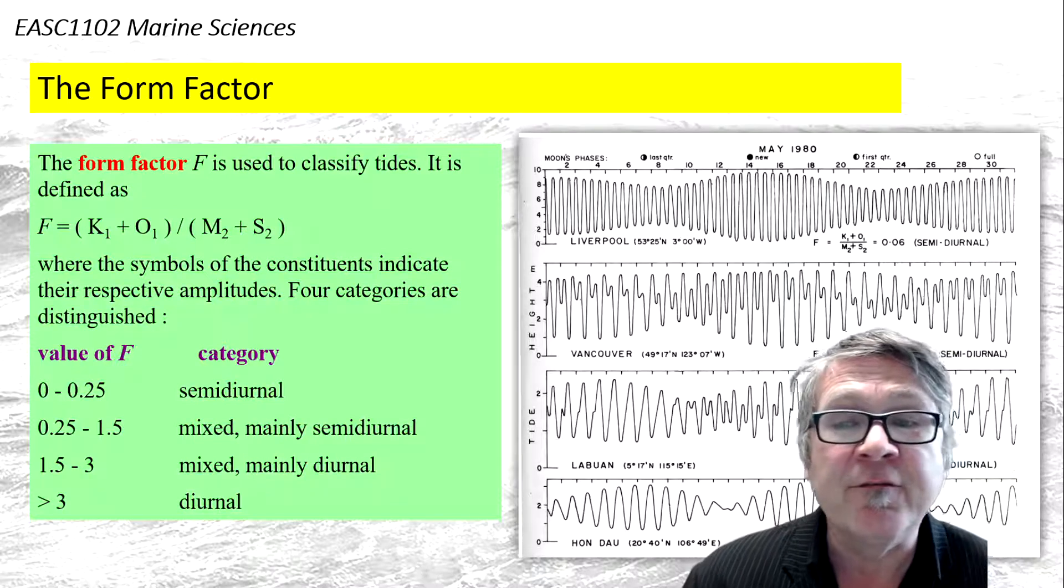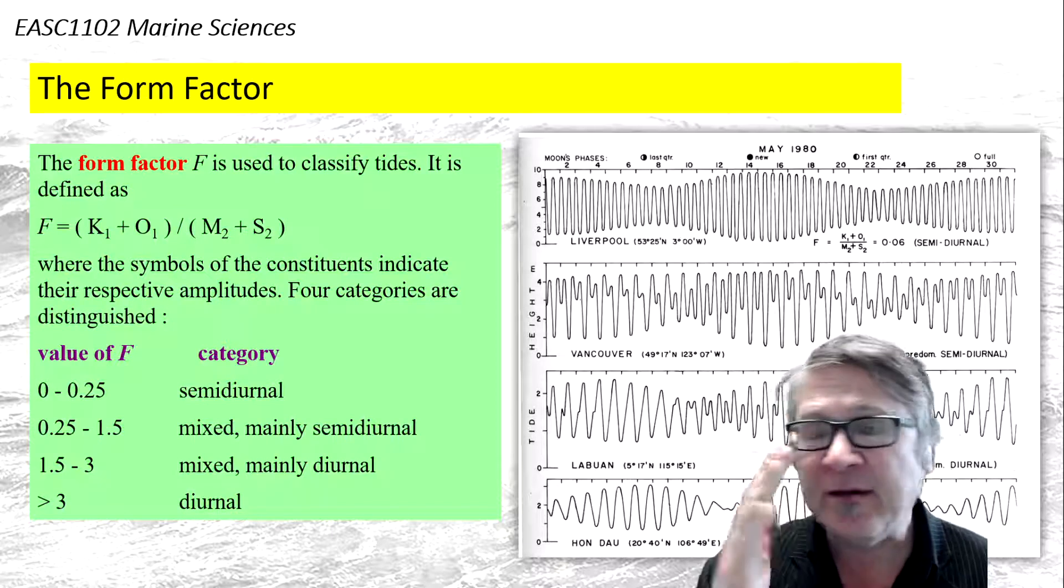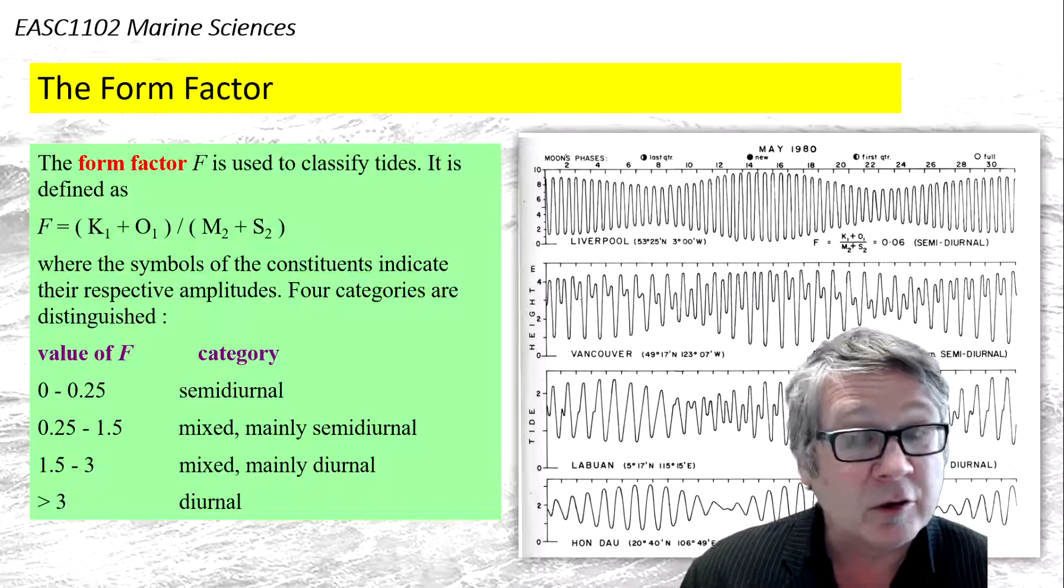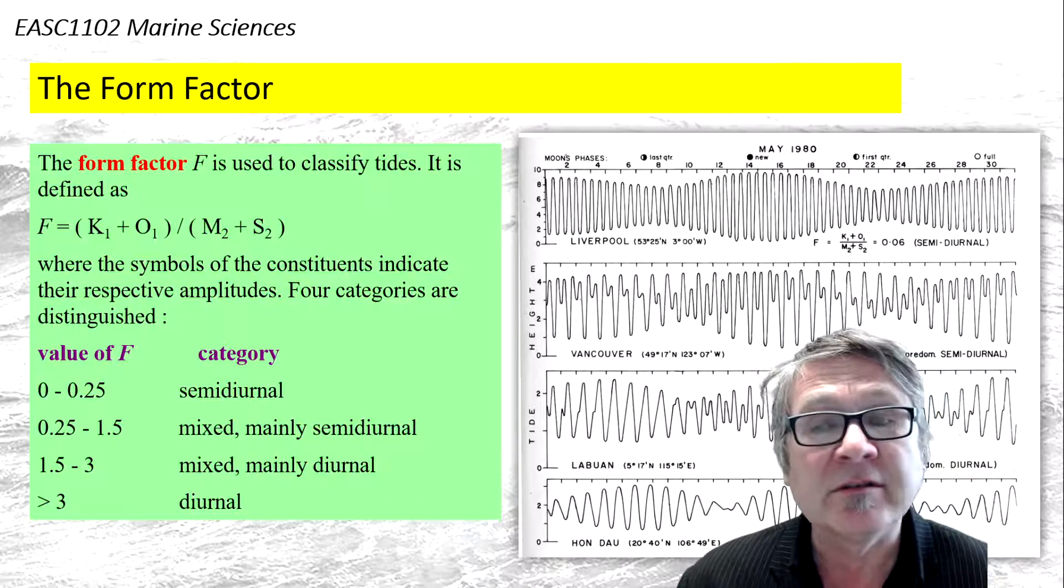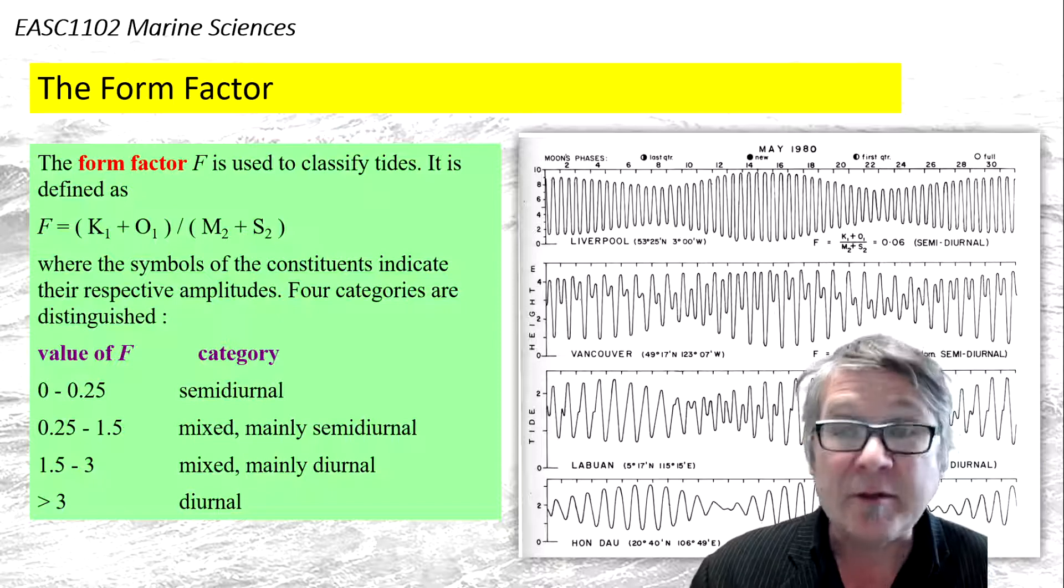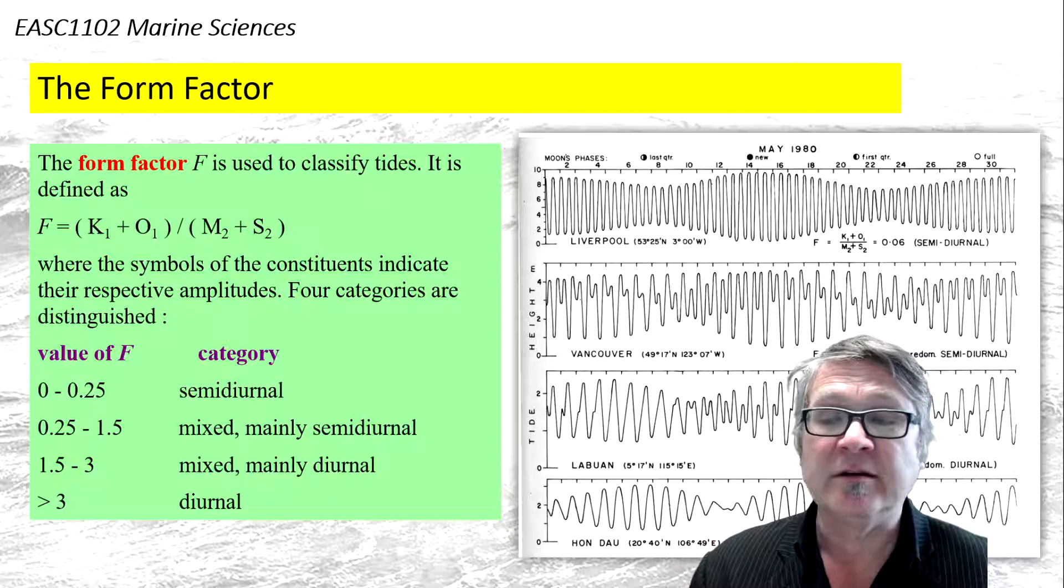First, let's have a look at the form factor. The form factor is used to classify tides. It is defined as looking at all the diurnal tides, the amplitudes of diurnal tides, and comparing it with the amplitude of the semi-diurnal tidal constituent. And this is what this formula is there.